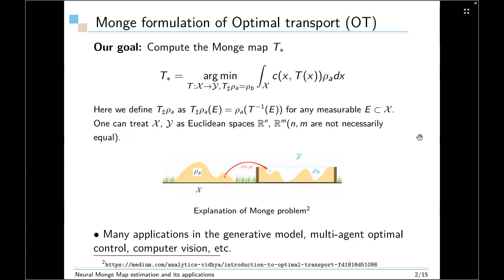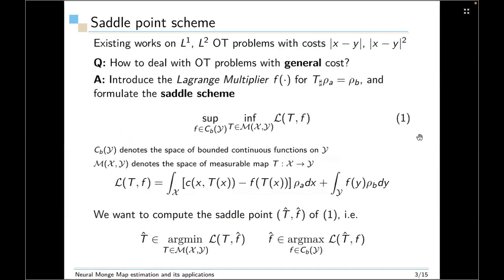So this formulation has many applications in the generative model, multi-agent optimal control, and computer vision. Later, we will review more applications in our paper. And you can see that we don't specify the cost to have any particular formula. And nearly all existing works work on L1 or L2 OT problems. So the cost is defined as the norm of X minus Y or the square norm of X minus Y. So how to deal with the OT problem with general cost? This is the question we ask in the paper.